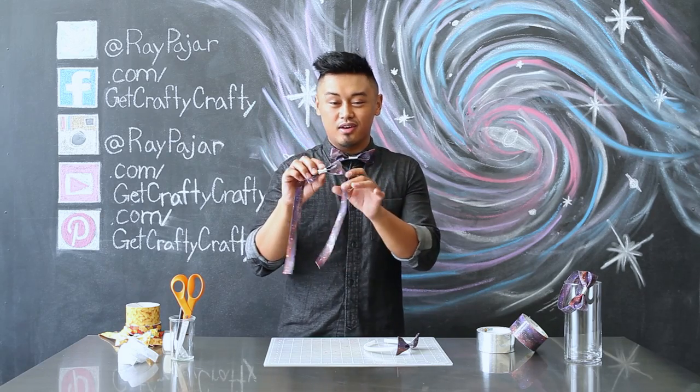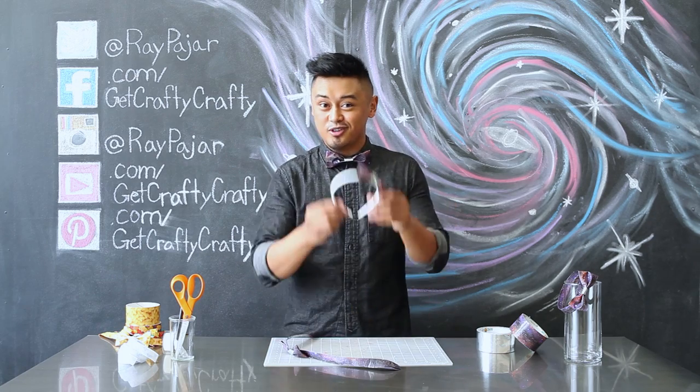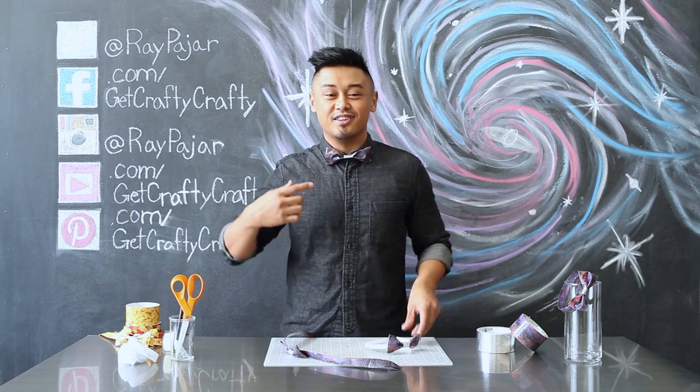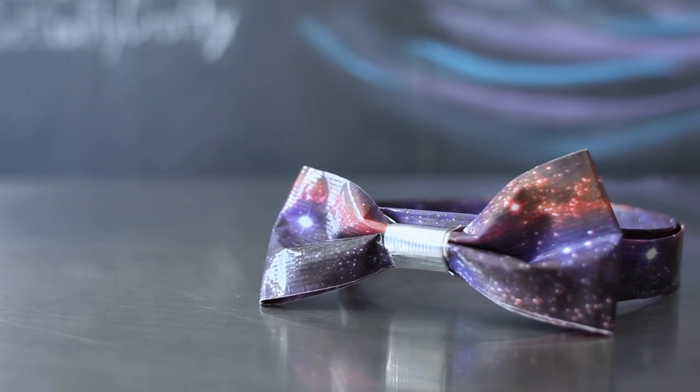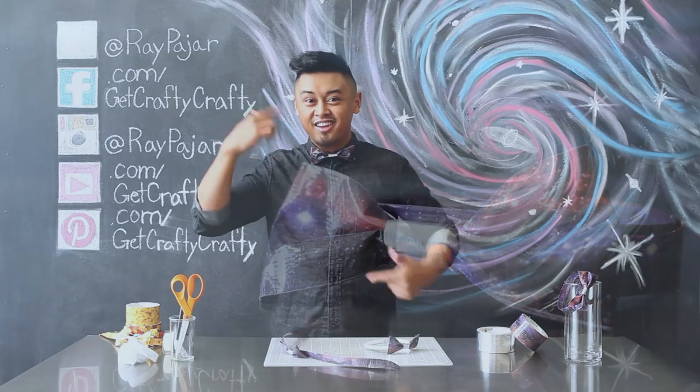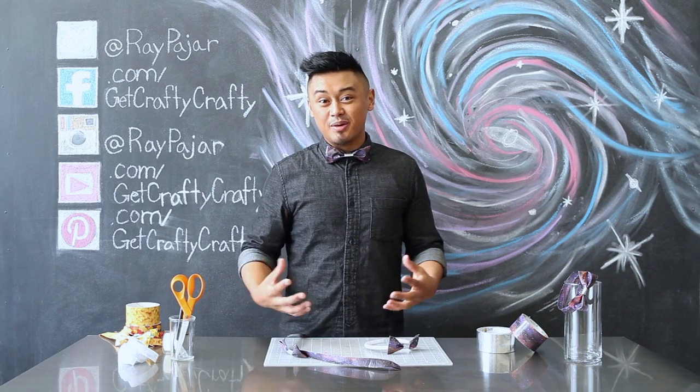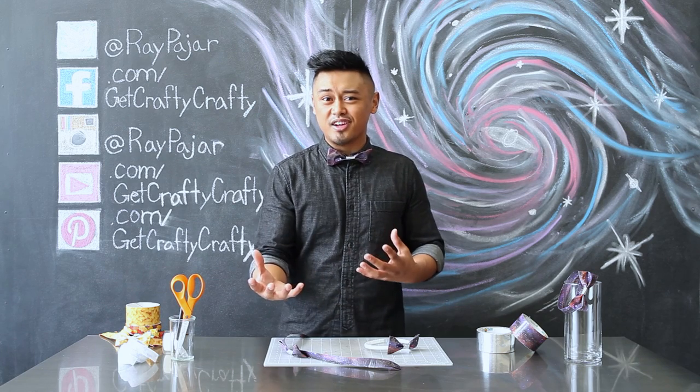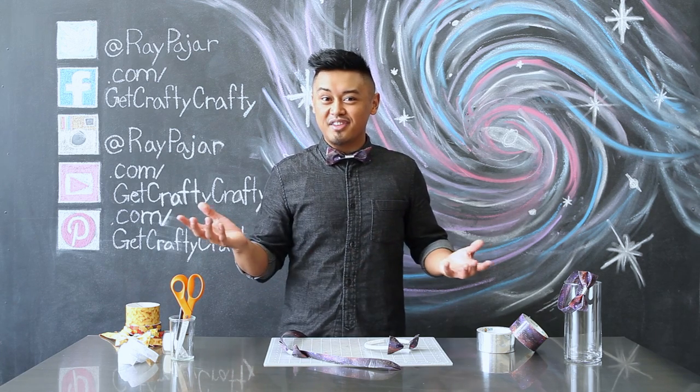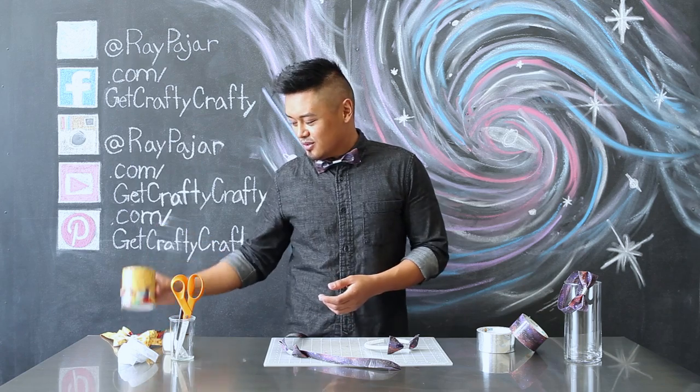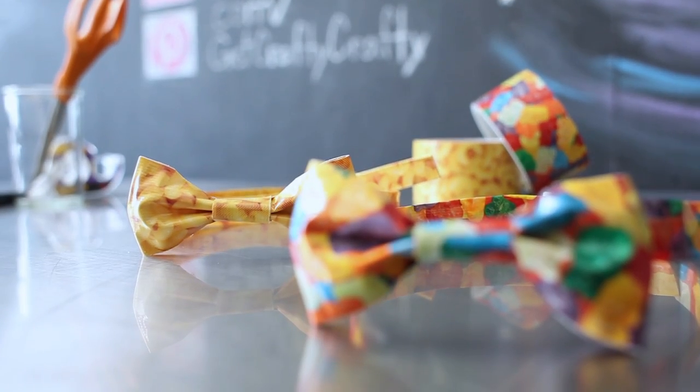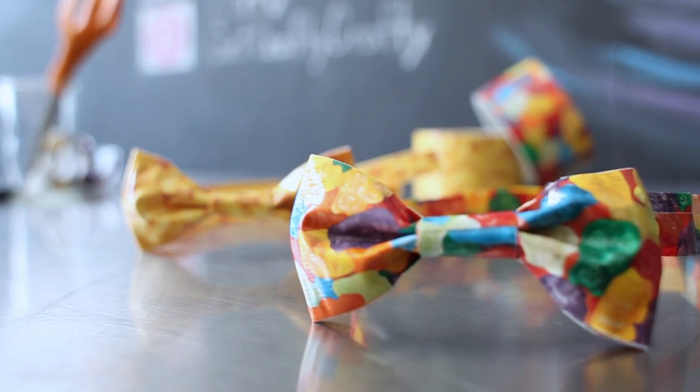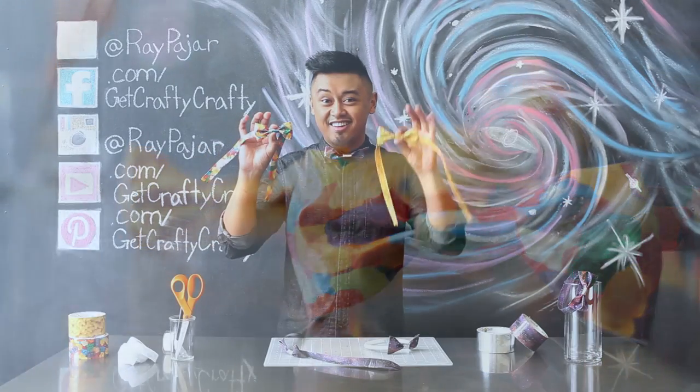After you've attached your bow either onto your collar or onto your headband, you are ready to wear it to whatever event you need. The great thing about this project is you can customize it any way that will either reflect your personality or the type of event that you're going to. I used my mac and cheese and my gummy bear duct tapes and I made two other bowties that are gummy bear and mac and cheese.